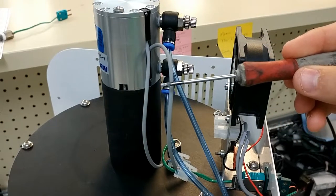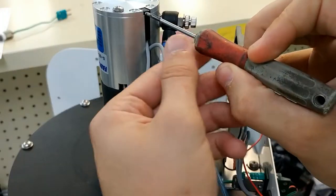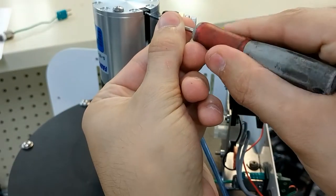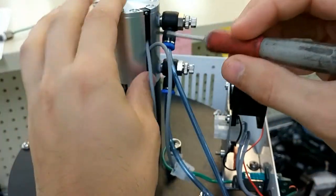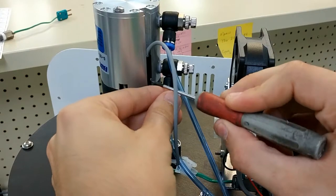Next, take a small standard screwdriver and untighten the screws on the pressing sensors. Once untightened, if you need a little help removing the sensors, you can use the flat side of the screwdriver to help push the sensors upwards.